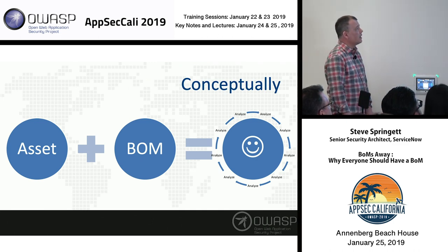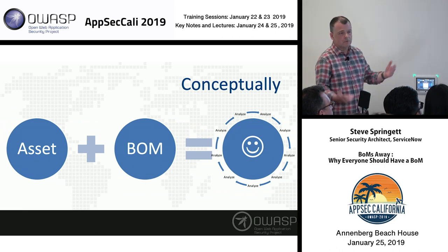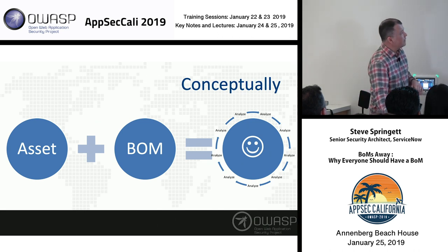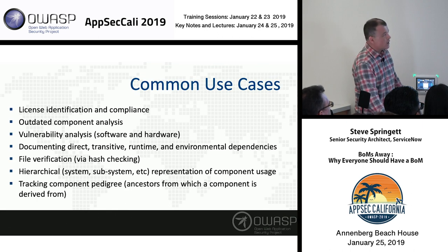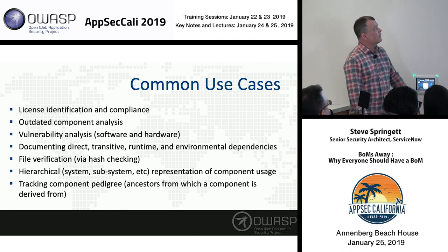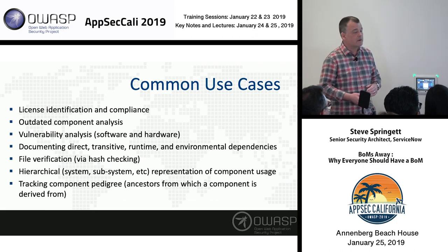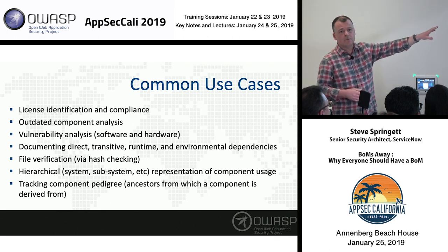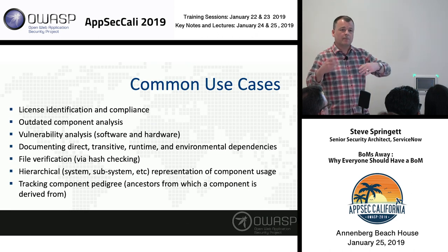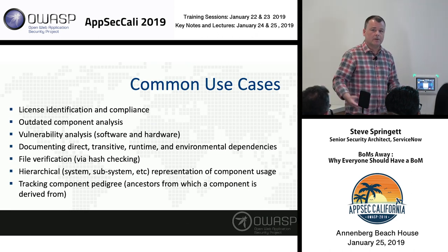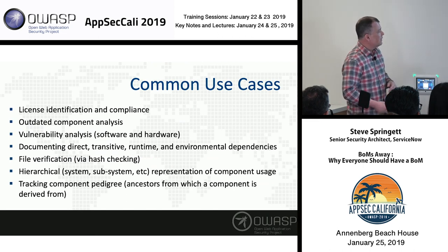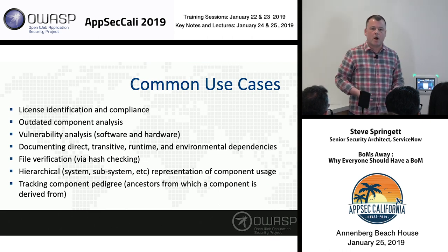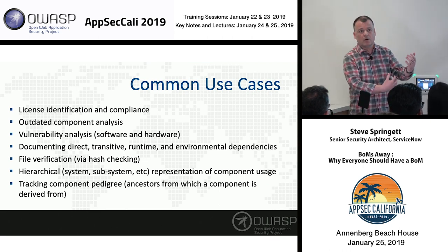Conceptually, what are we talking about? We have an asset — could be a mobile device, a microservice, a consumer application. We create a Bill of Materials, and then we constantly analyze it. It's not hard. Some use cases: license identification, outdated component analysis, vulnerability analysis for both software and hardware, documenting direct and transitive dependencies like most build systems do. We can also document things build systems can't, like runtime dependencies and environmental dependencies, file verification, and tracking component pedigree — what does this component derive from, is it a fork of something, and is there any inherent risk in there?